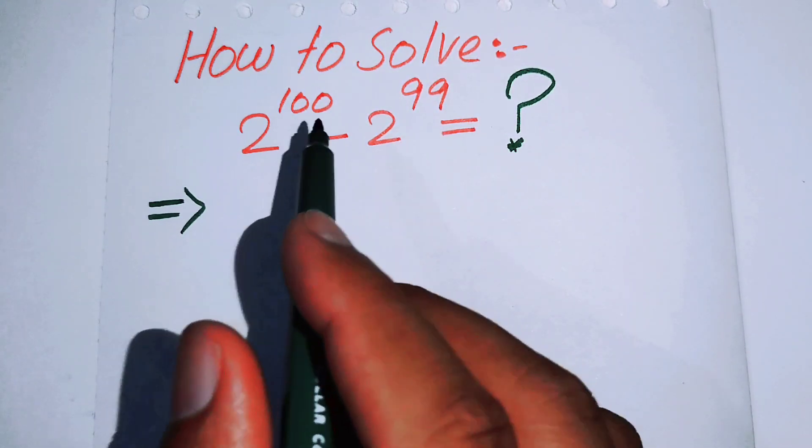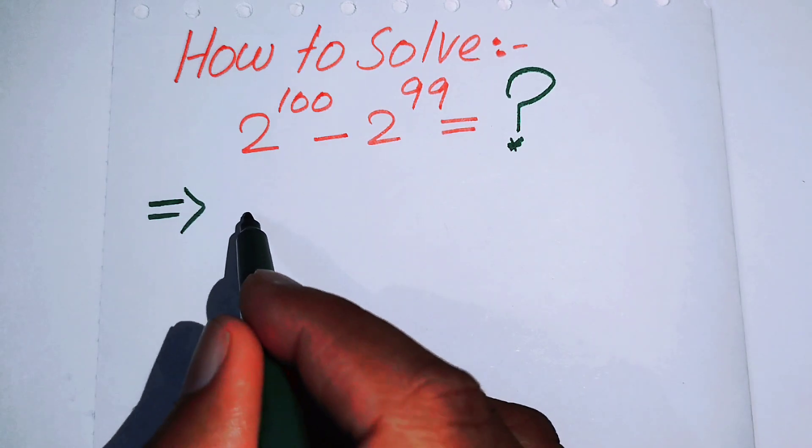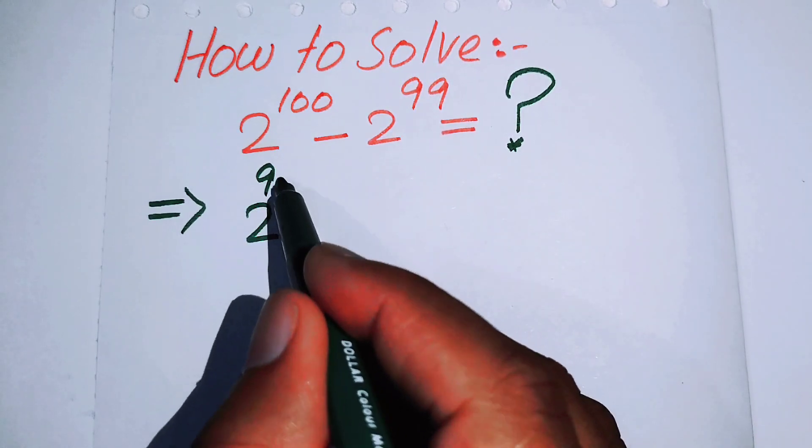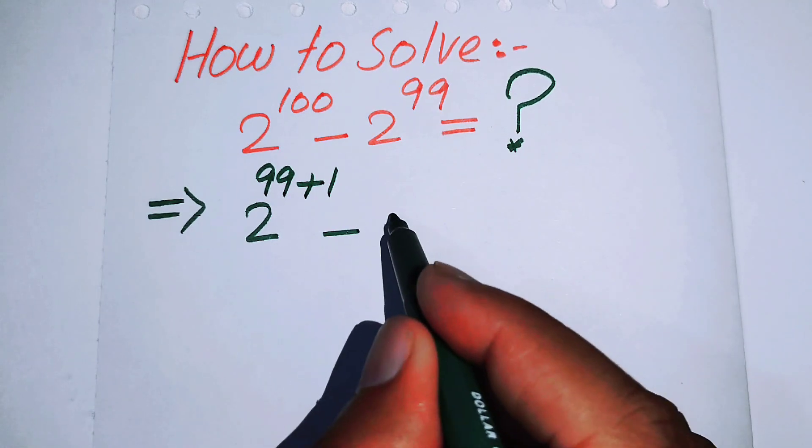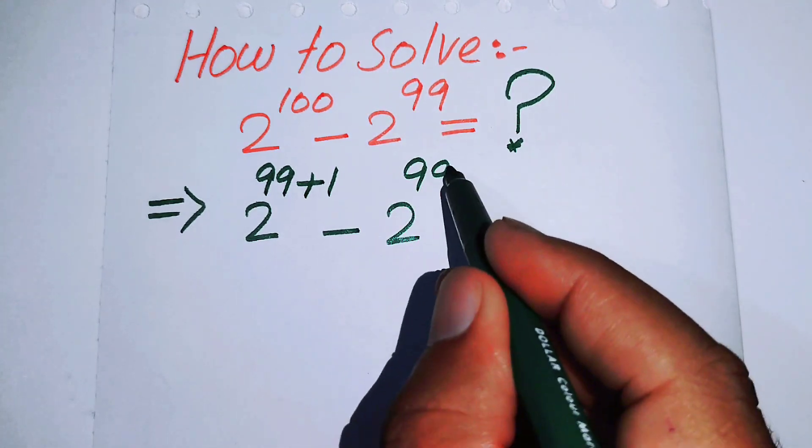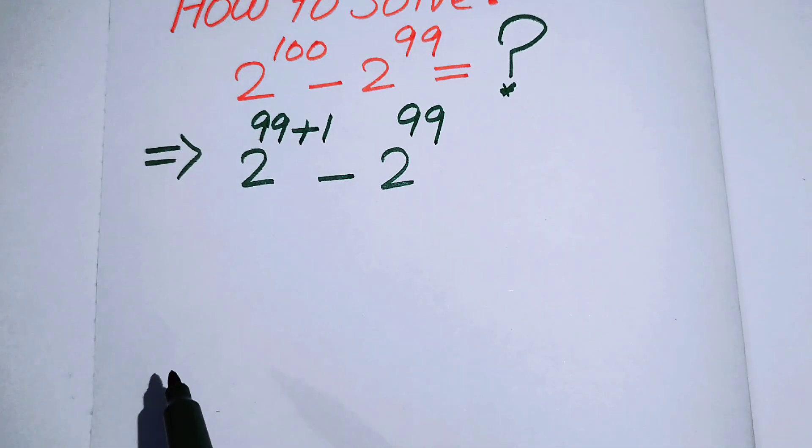The very first thing we are going to do is rewrite this equation. Here you have 2 to the power of 100, and we can write it as 2 to the power of 99 plus 1, minus 2 to the power of 99.